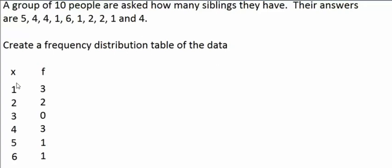So what you're doing is listing every number in the x column from lowest to highest, then counting how many times each number appeared in the data and putting that count in the f column. This table tells us that the data set has three ones, two twos, no threes, three fours, one five, and one six.